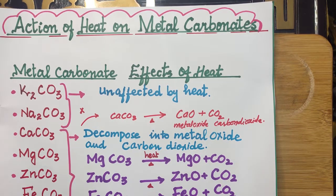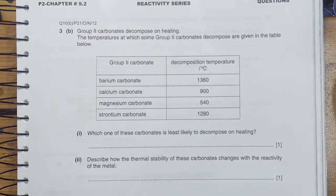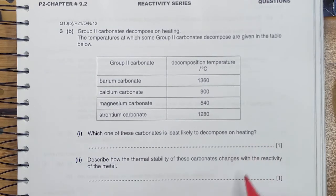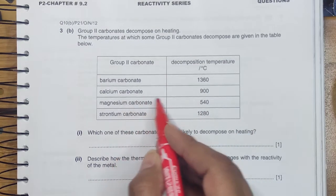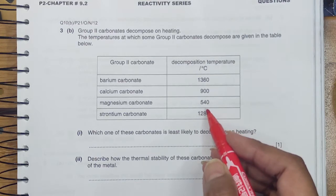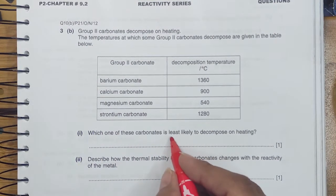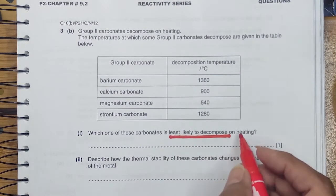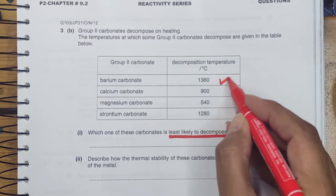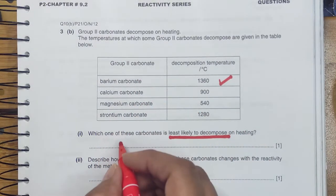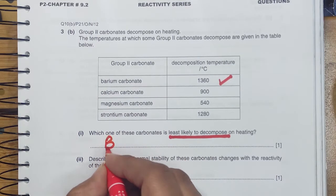Now we are going to do a question based on past papers. Group 2 carbonates decompose on heating. The temperature at which some group 2 carbonates decompose are given below in the data. Which one of these carbonates is least likely to decompose on heating — meaning which one doesn't decompose easily? That would be barium carbonate at 1360°C — it requires the most heat to decompose, so it is least likely to decompose on heating.